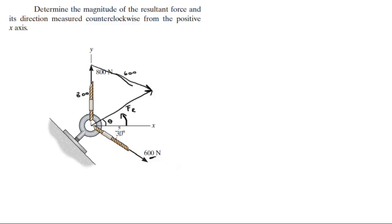So what do you know? You know that the angle it forms right here is 30 degrees. Therefore this angle is 60 degrees, because 90 minus 30 is equal to 60.